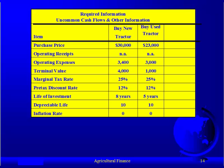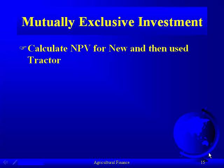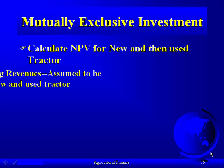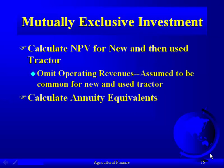You can refer back to the verbiage and this table as we go through this problem. For the mutually exclusive investment, we're going to calculate the net present value for the new and then calculate the net present value for the used tractor. We've already stated that the operating revenues are the same for both tractors, so we omit them.